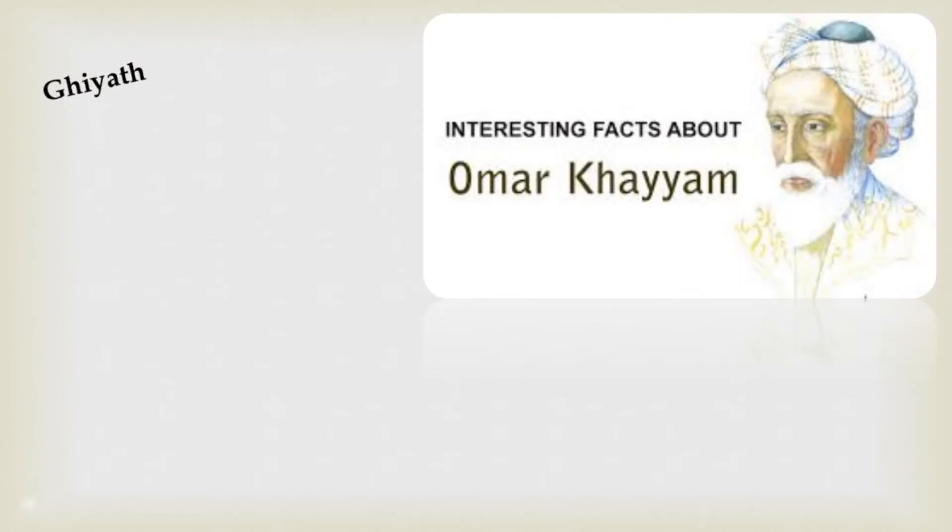His full name was Ghiyath al-Din Abu al-Fath Umar ibn Ibrahim Al-Nishapuri Al-Khayyami. He was a Persian mathematician, astronomer, and poet.